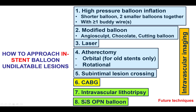There are two additional options currently becoming available in the United States. The first is intravascular lithotripsy — the coronary catheter is not yet approved, however the peripheral device can be used off-label in some cases like this one to expand the lesion. Also, in Europe there is the SIS balloon, which can go up to 40 to 50 atmospheres and can really help dilate such lesions.